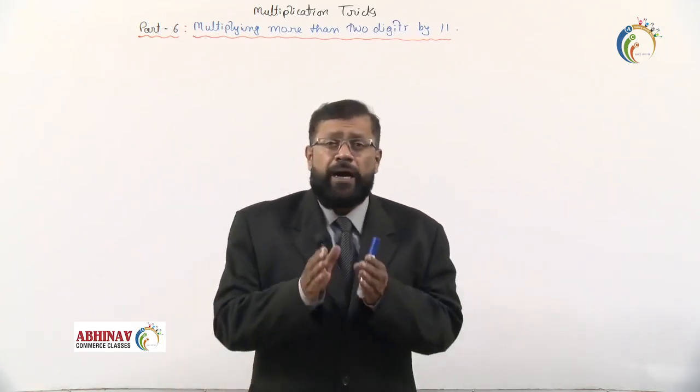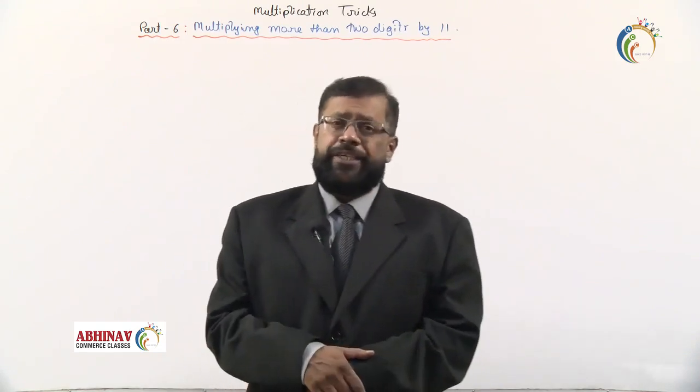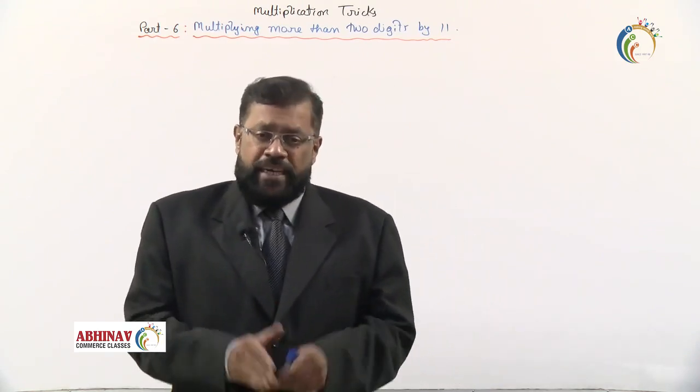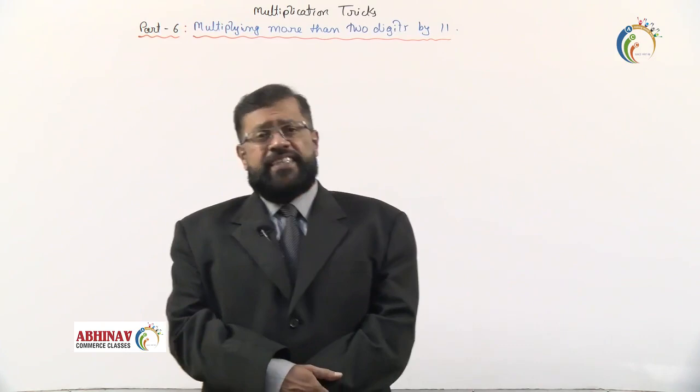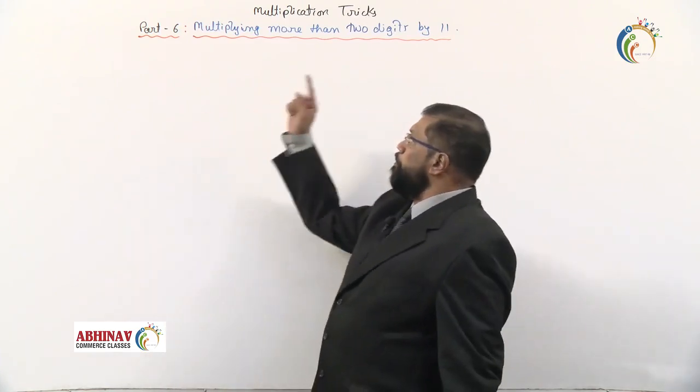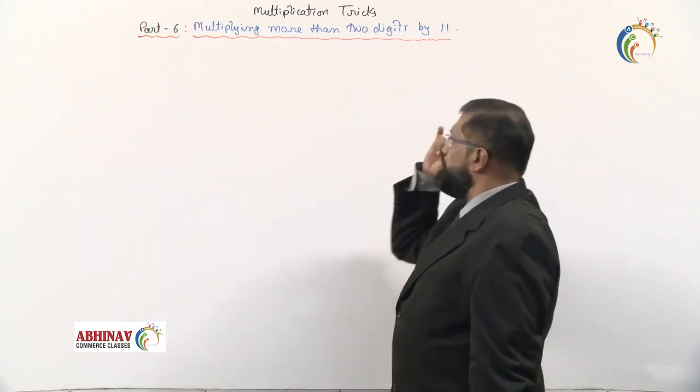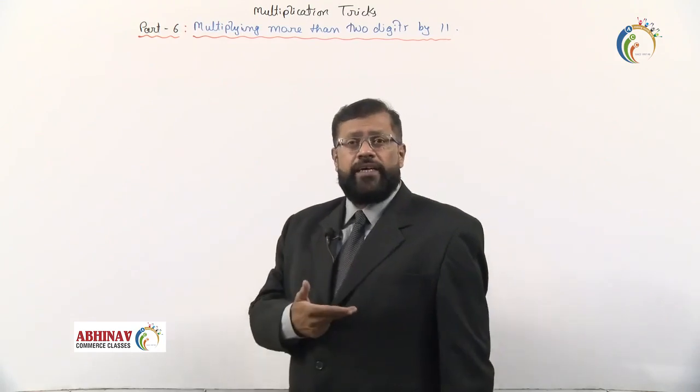In the last session we completed Part 5 on multiplication tricks: multiplying by nines. In this session we'll take Part 6: multiplying more than two digits by 11.